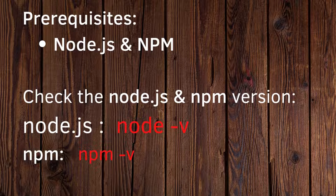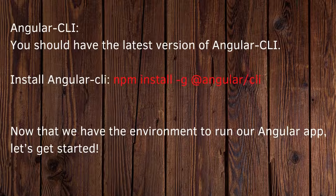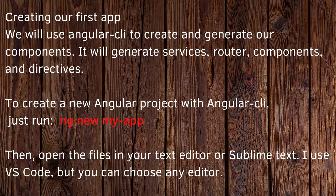One more thing you need to install to create your Angular application is Angular CLI. Install the latest version by going to your command prompt and running: `npm install -g @angular/cli`. By giving this command you download everything for Angular CLI. Now your environment is set up — Node.js, npm, and Angular CLI are all installed.